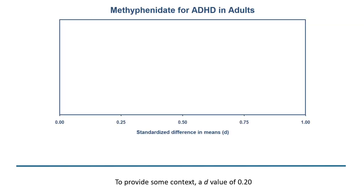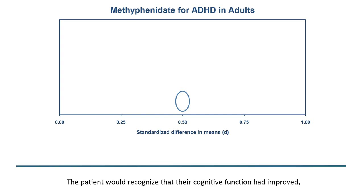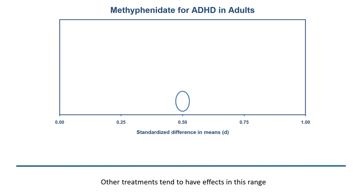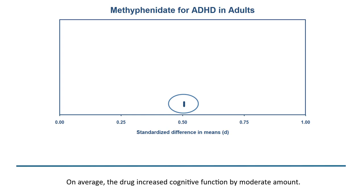To provide some context: a D value of 0.20 would represent a small effect with little clinical impact. A D value of 0.50 would represent a moderate effect — the patient would recognize that their cognitive function had improved, and coworkers might notice a change. A D value of 0.80 would represent a large effect, which would be exceptional. It turns out that the mean effect size is roughly 0.50, so on average the drug increased cognitive function by a moderate amount.